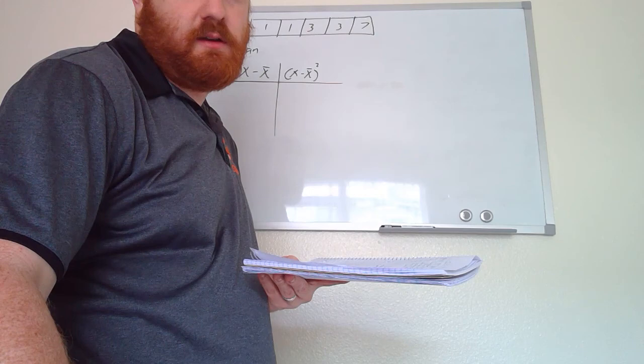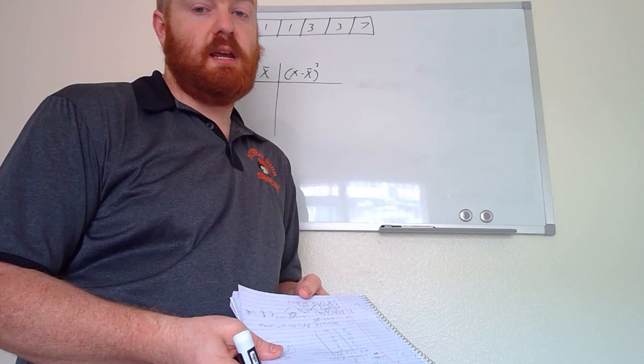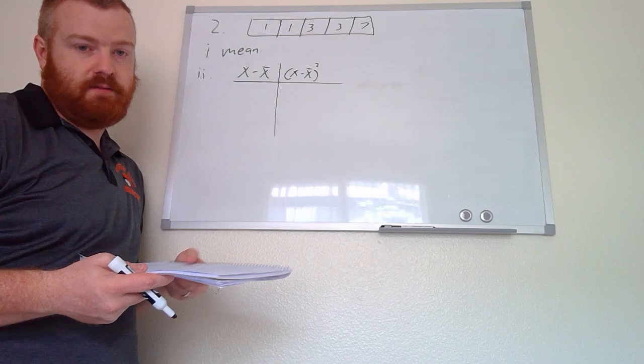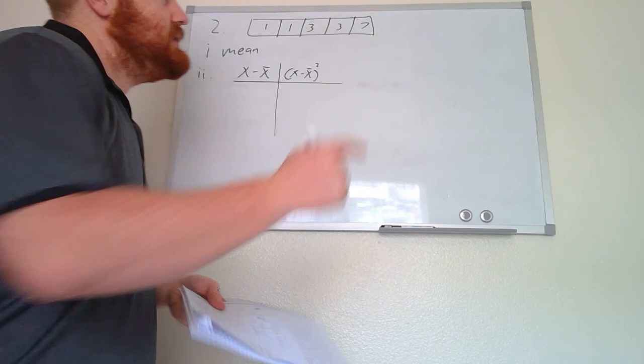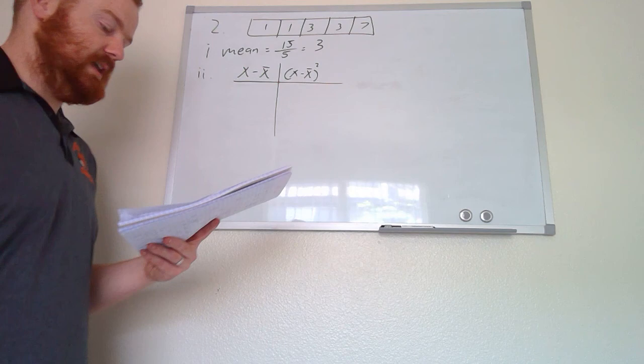In the next problem, we take a random sample of numbered balls in an old-fashioned lottery machine and get the numbers 1, 1, 3, 3, 7. For part one, finding the mean — the mean is the average. We add these together: 1 plus 1 plus 3 plus 3 plus 7 equals 15. There are five numbers total, so we do 15 divided by 5, which equals 3. That's the mean.